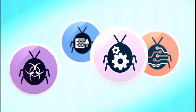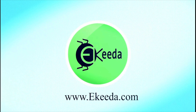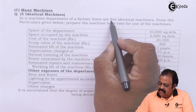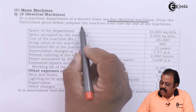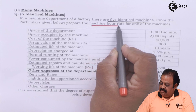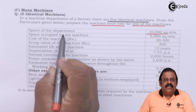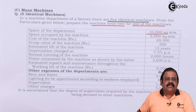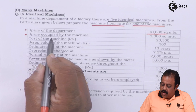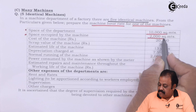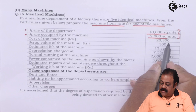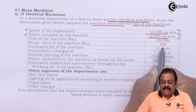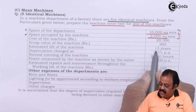Let us read the question. In a machine department of a factory, there are 5 identical machines. From the particulars given below, prepare the machine hour rate for one of the machines. Space of the department: 10,000 square meters. Space occupied by the machine: 2,000 square meters. Cost of the machine: Rs. 20,300. Scrap value of the machine: Rs. 300. Estimated life of the machine: 13 years.